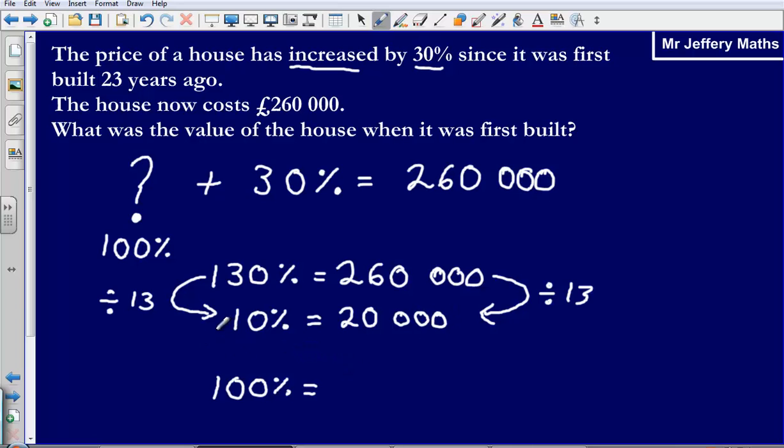Then from here, to get from my 10% to my 100%, what am I going to have to do? I'm simply going to have to multiply by 10. So taking my 20,000, multiplying that by 10, that's going to give me an answer of 200,000. So what was the value of the house when it was first built? When it was first built, it was valued at £200,000.